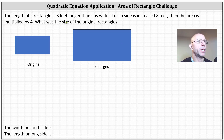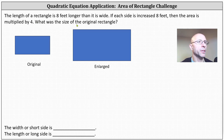The length of a rectangle is eight feet longer than it is wide. If each side is increased by eight feet, then the area is multiplied by four. What was the size of the original rectangle?